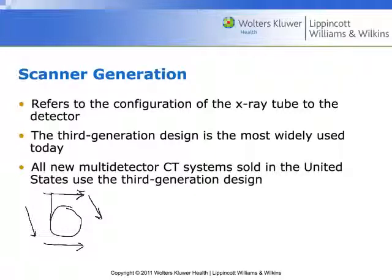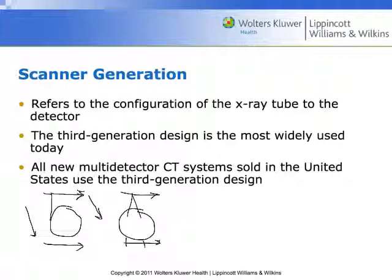Second generation scanners were similar to the first but instead of a pencil-thin x-ray beam, they used a fan beam with a larger detector array on the other side. It performed the same scan-reset-move pattern — scan together, reset and move, scan together, reset and move — like a really bad robot dance.